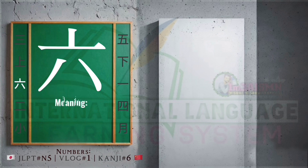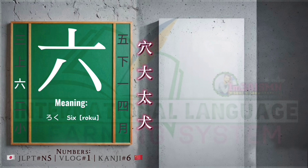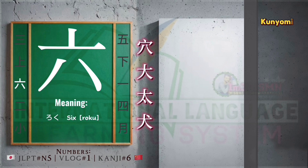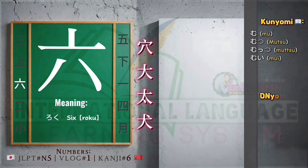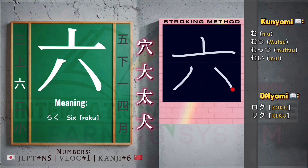This kanji means 6. Similar types of this kanji. Kunyomi reading of this kanji. Onyomi reading of this kanji. Stroking method of this character — it has four strokes.